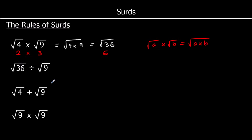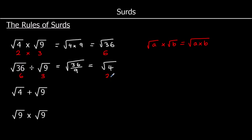The second rule: I can also divide square roots. Root 36 divided by root 9 is equal to the square root of 36 over 9. And 36 divided by 9 is 4. Root 36 is 6, root 9 is 3, and root 4 is 2. So 6 divided by 3 equals 2 — that works. The rule is: root a over root b is the same as the square root of a divided by b.